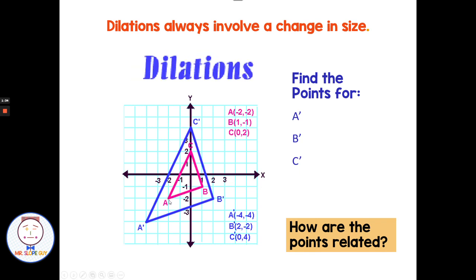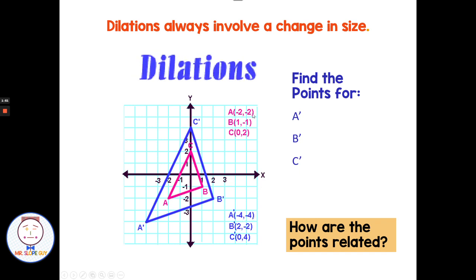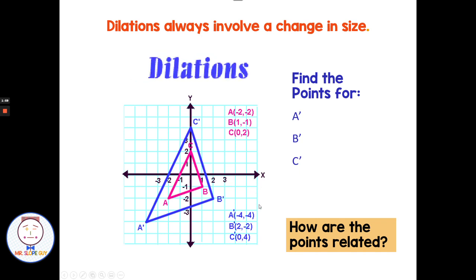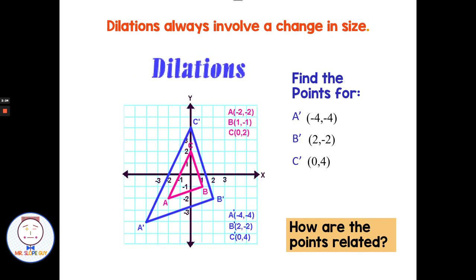Looking at each of the points: A is at negative 2, negative 2; B is at 1, negative 1; and C is at 0, 2. For the enlargement, A prime is at negative 4, negative 4; B prime is at 2, negative 2; and C prime is at 0, 4. Looking for a pattern — negative 2 became negative 4, so each number was multiplied by 2. From B to B prime, 1 times 2 is 2, negative 1 times 2 is negative 2. Even 0 times 2 is 0, and 2 times 2 is 4. So each of the points has been multiplied by 2, showing us a scale factor or enlargement of 2.